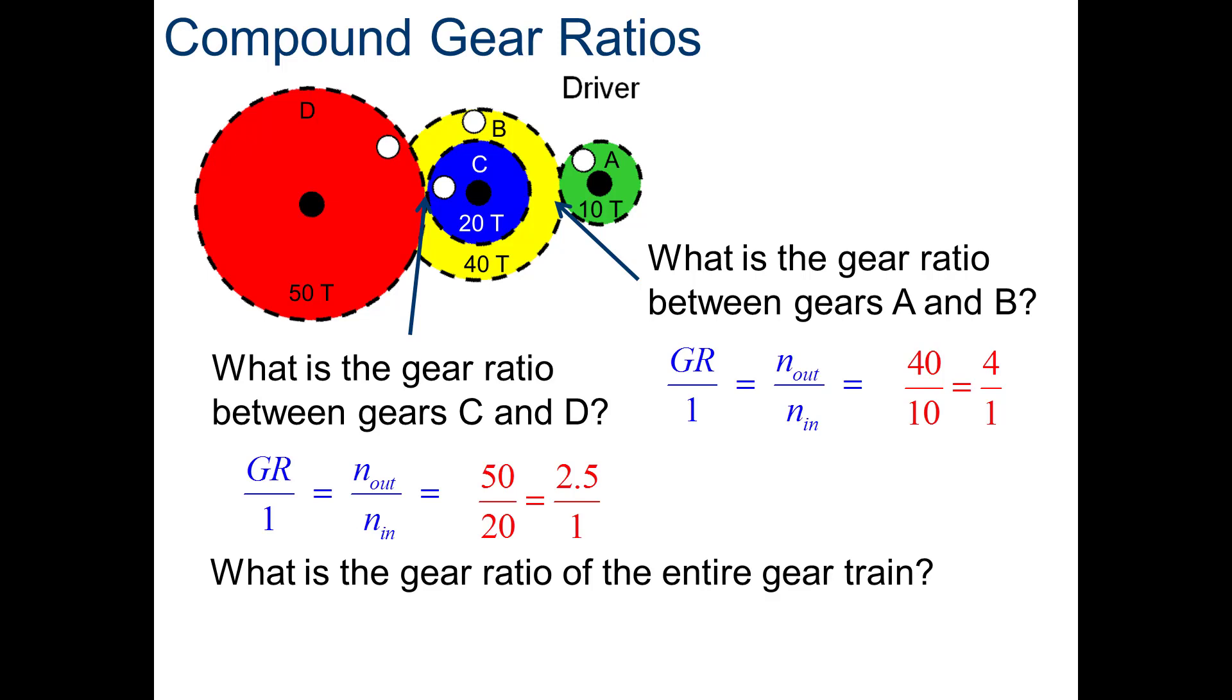Now, with a compound gear train, we multiply the gear ratios between gear sets. So, the gear ratio for the entire gear train is 4 to 1 times 2.5 to 1 for a total gear ratio of 10 to 1. So, in other words, gear A must rotate 10 times in order for gear D to complete one full revolution.